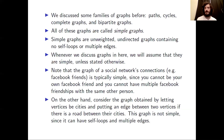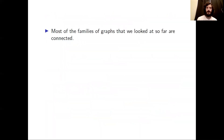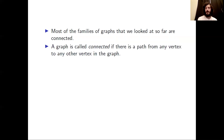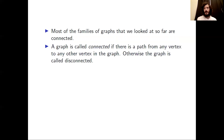Most of the families of graphs we looked at were also connected. We define a graph to be connected if there is a path from any vertex in the graph to any other vertex. If there exists a pair of vertices with no path between them, we say the graph is disconnected.